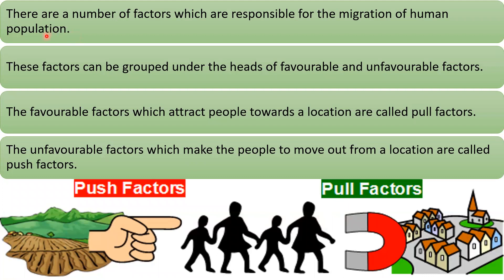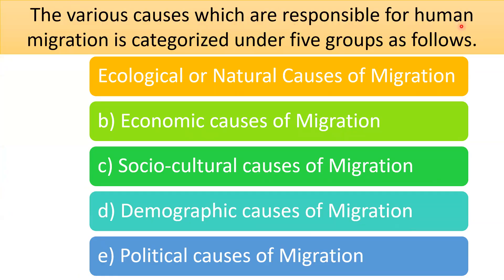There are a number of factors responsible for the migration of human population. These factors can be grouped under favorable factors and unfavorable factors. The favorable factors which attract people towards a location are called pull factors. The unfavorable factors — the factors which make people leave their place — are called push factors. The various causes responsible for human migration are categorized under five groups: ecological or natural causes, economic causes, socio-cultural causes, demographic causes, and political causes.